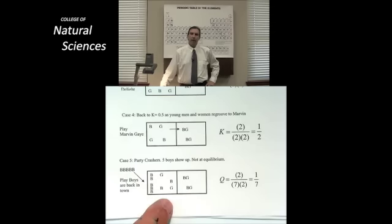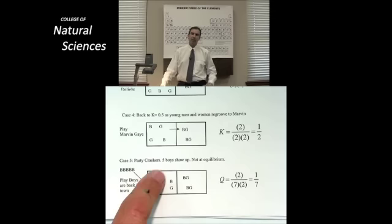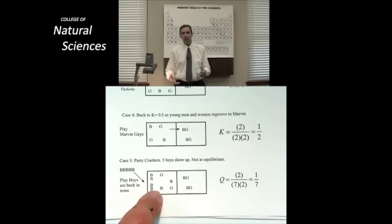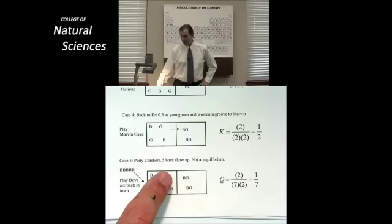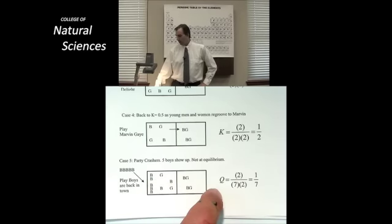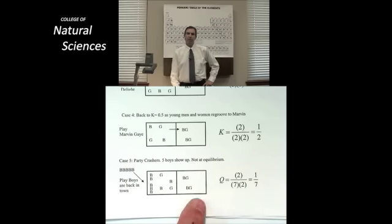Now remember, I had a boy-girl couple in the back and another boy-girl couple. Two boys, two girls out in the front. Now five boys are there. Can you just imagine the tension of what's going on in the room right now? Q, because things have gotten stressed, has become one over seven. Two in the back, seven times two in the front. Seven boys times two girls, one seventh.